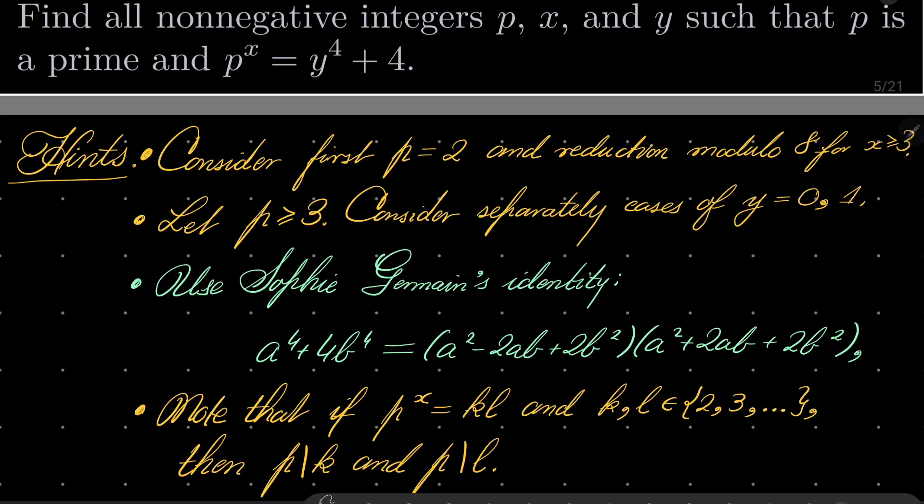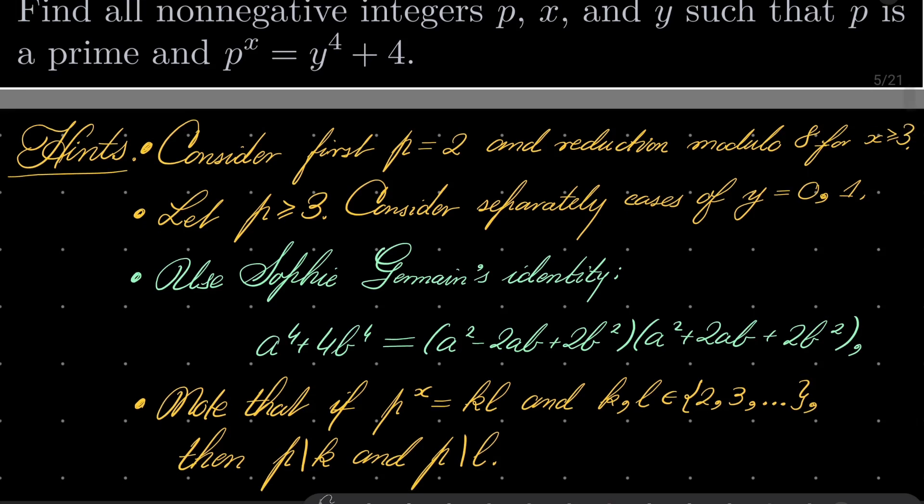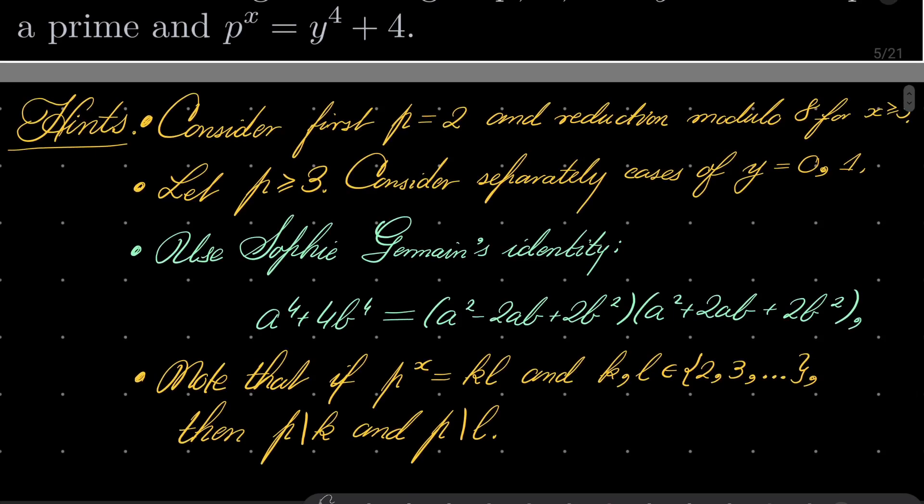And then let p be greater than or equal 3. Consider separately cases where y is 0 or 1. Crucially, we use this well-known formula called Sophie Germain identity. a^4 + 4b^4 can be factorized in this way. If you don't recognize this identity, then first prove it, proof is obvious, and use it then and remember it.